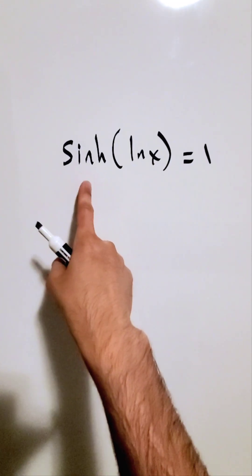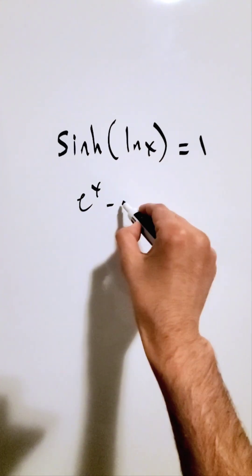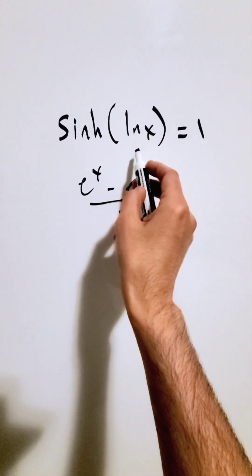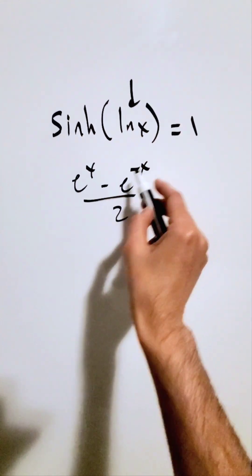Remember the definition of this hyperbolic sine is equal to e to the x minus e to the minus x divided by 2. And then we are bringing the natural log x right here into places of x.